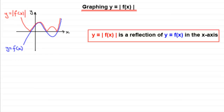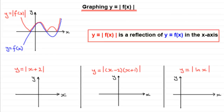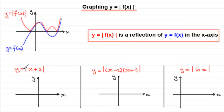Now here are a few examples for you to try. See if you can sketch: y equals the mod of (x + 2), y equals the mod of (x − 2)(x + 1), and y equals the mod of the natural log of x. Try to mark on any points where these curves cross the x and y axes. Pause the video if you'd like to have a go, then come back and we'll see how you got on.